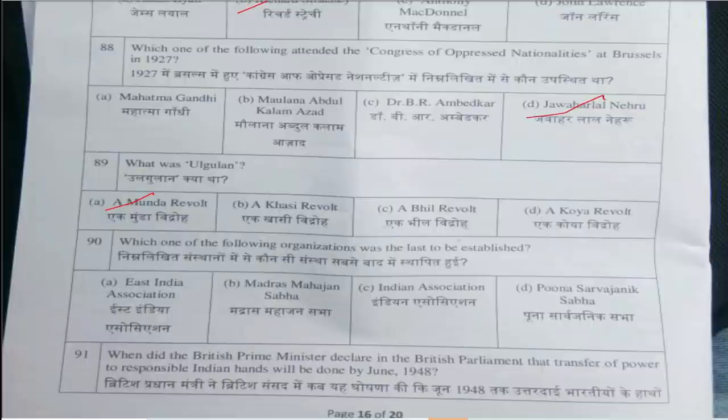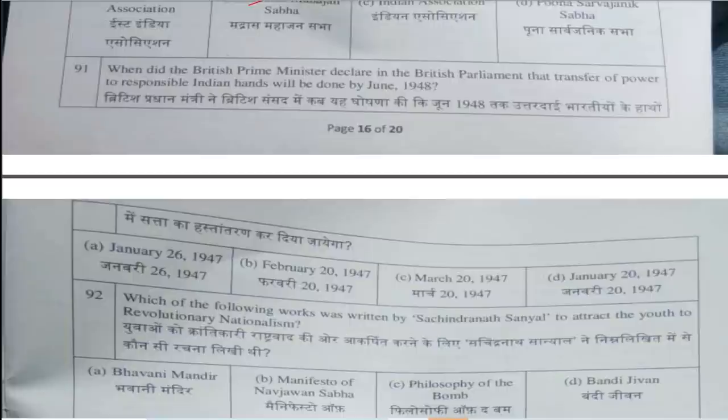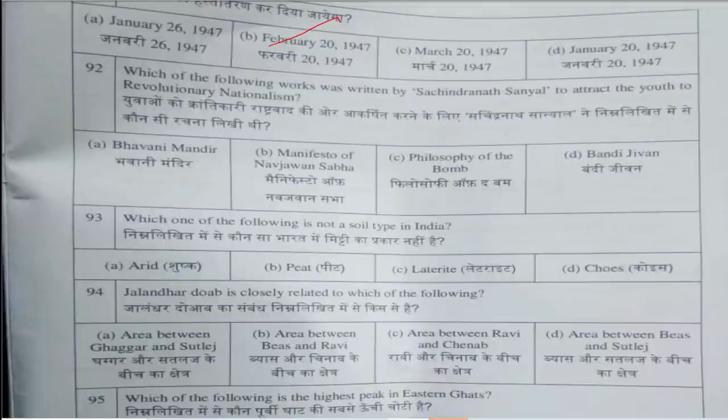Question number 87: Who presided over the commission appointed on famine policy in 1880? Answer is option B, Richard Strachey. Question number 88 onwards: When did the British Prime Minister declare in the British Parliament that transfer of power to responsible Indians would be done by June 1948? Answer is option B, February 20, 1947.